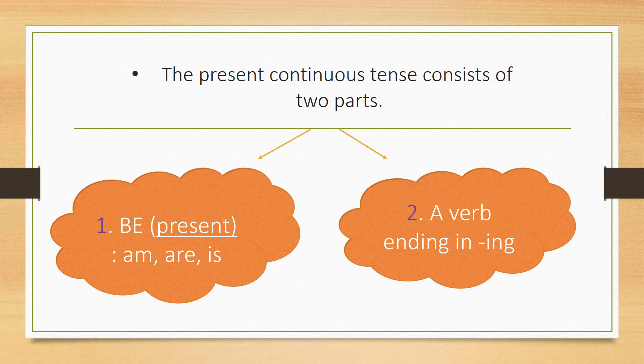Number one: be, present — am, are, is. And then number two: a verb ending in -ing.